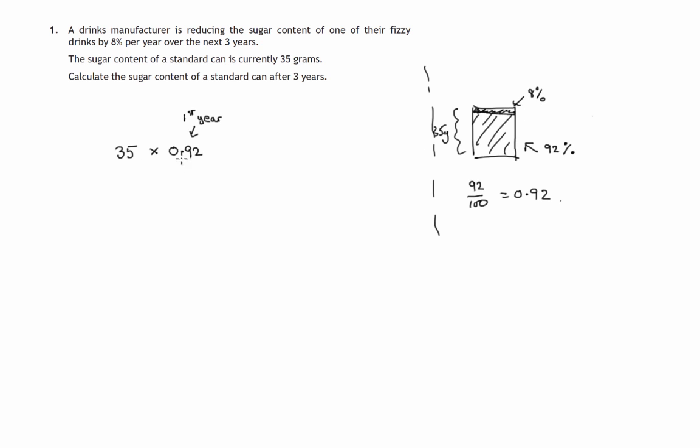So after one year, 35 times 0.92—that'll be what's left of the sugar. Then for the second year, 92% of that remains again. He takes another 8% away, so we multiply by 0.92 again to find 92% of the remaining sugar. That's what happens for the second year.